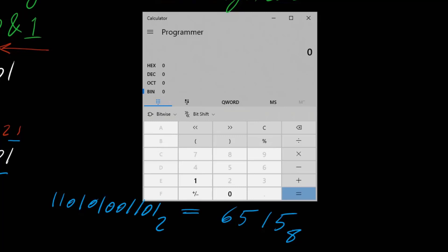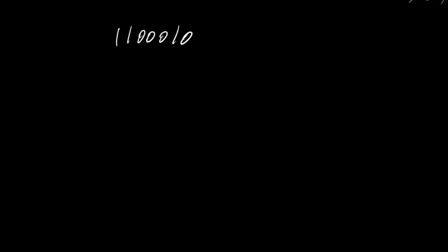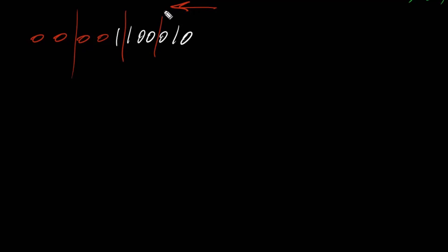Let's do another example. Say we have binary 1 1 0 0 0 1 0 and want to convert it to octal. We count from right to left, separating every 3 bits: group 1, group 2, and group 3. We count right to left because we may have an incomplete group with leading zeros on the left, which don't change the value.